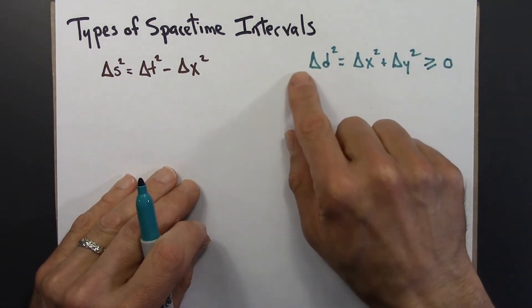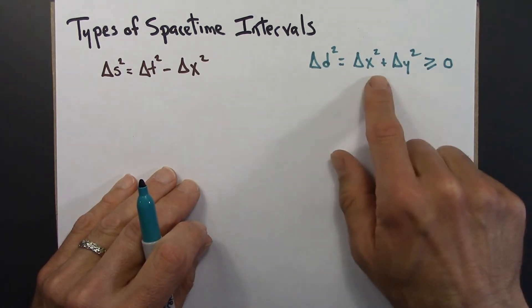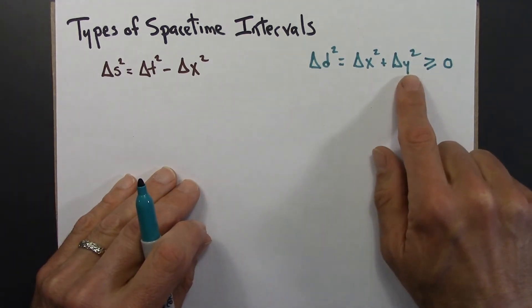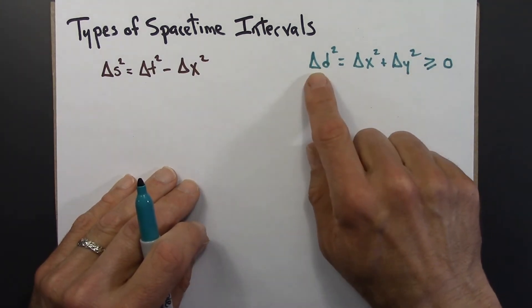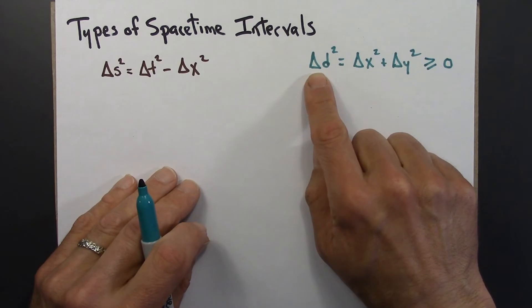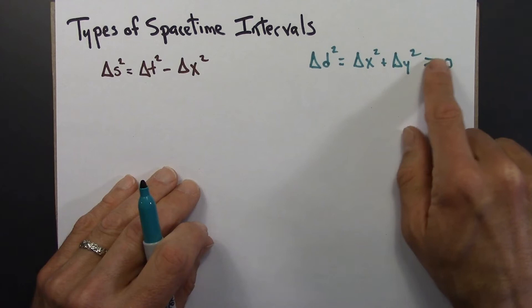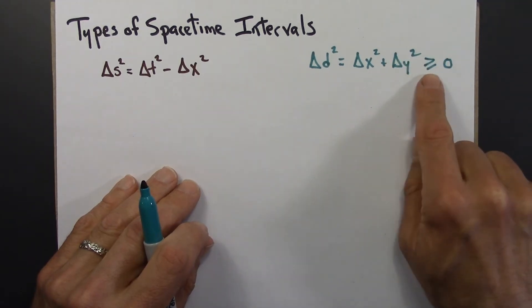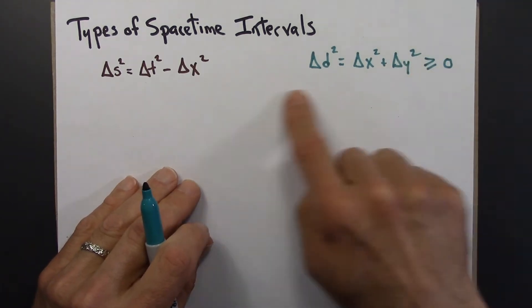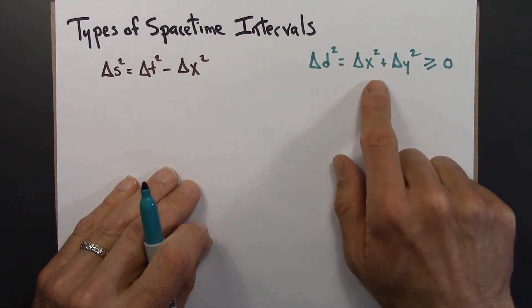The only way this can be equal to zero is if the two points are the same. Remember, this formula gives us the distance between two points, and this is the x-separation and this is the y-separation between those two points. If the distance between two points is zero, the only way that can be true is if those two points are the same point. So this is positive; the only way it's equal is this boring case where the two points are the same.